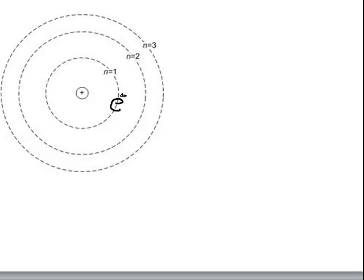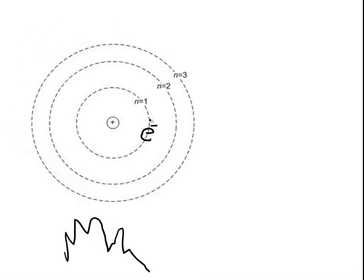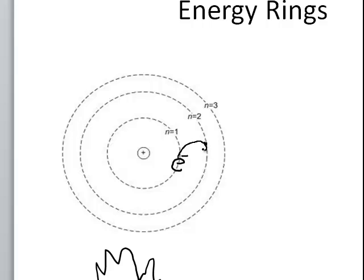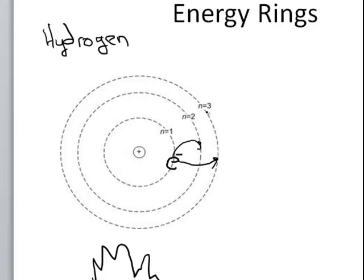If you put energy into this atom — for example, put a fire underneath it — what's going to happen is these electrons are going to jump to higher energy levels. They might jump from the first to the second, or from the first to the third, and so on. Bohr looked at the hydrogen atom and came up with a model of how the atom works.